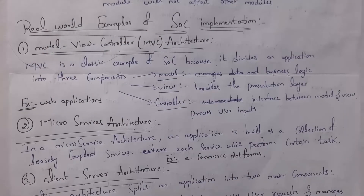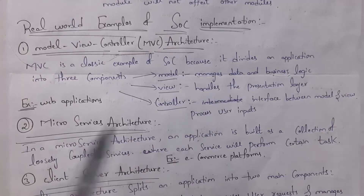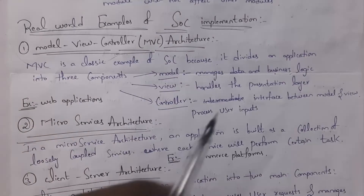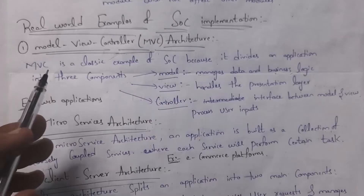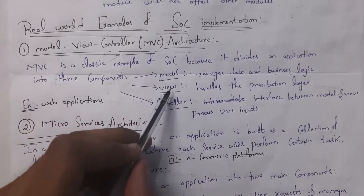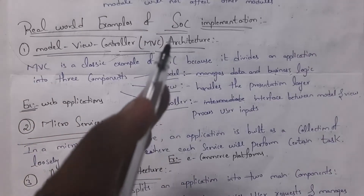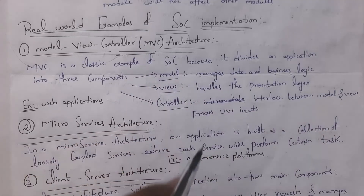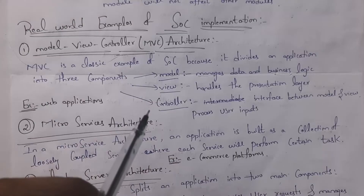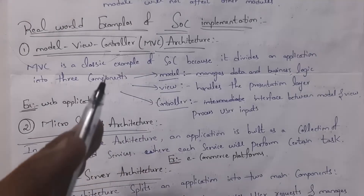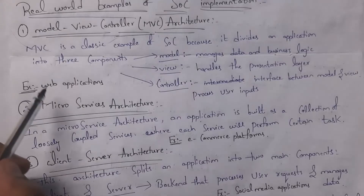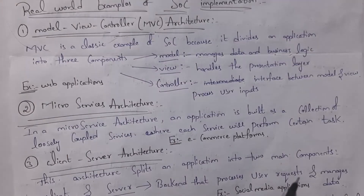These are some real-world examples where separation of concerns is implemented. First one is Model-View-Controller architecture. MVC is a classic example of separation of concerns because it divides the application into three components: Model, View, and Controller. Model manages data and business logic, View handles the presentation layer, and Controller acts as the interface — the mid-layer between model and view — processing inputs. Web applications are examples of MVC architecture.